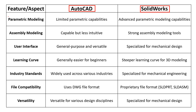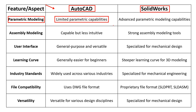Parametric Modeling: AutoCAD primarily uses 2D drafting and 3D modeling tools, but its parametric capabilities are not as robust as those of SOLIDWORKS. While AutoCAD has introduced parametric features, SOLIDWORKS is known for its more advanced parametric modeling capabilities. SOLIDWORKS is built around parametric modeling, allowing users to create relationships and constraints between different parts and features. This parametric approach enables easy modification of designs by changing a single parameter, updating the entire model accordingly.